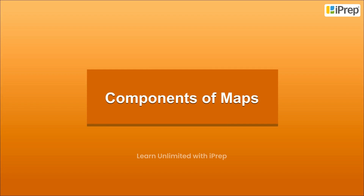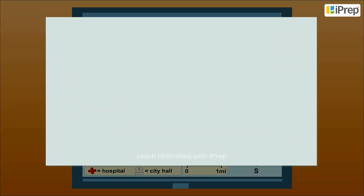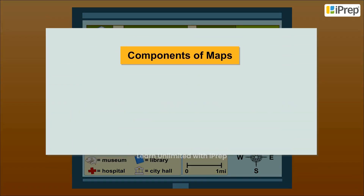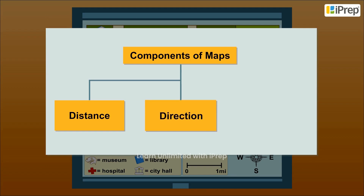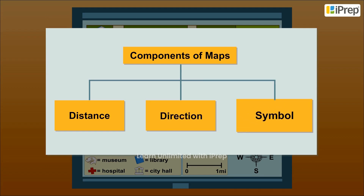Components of Maps. There are three components of a map: 1. Distance, 2. Direction, 3. Symbol.